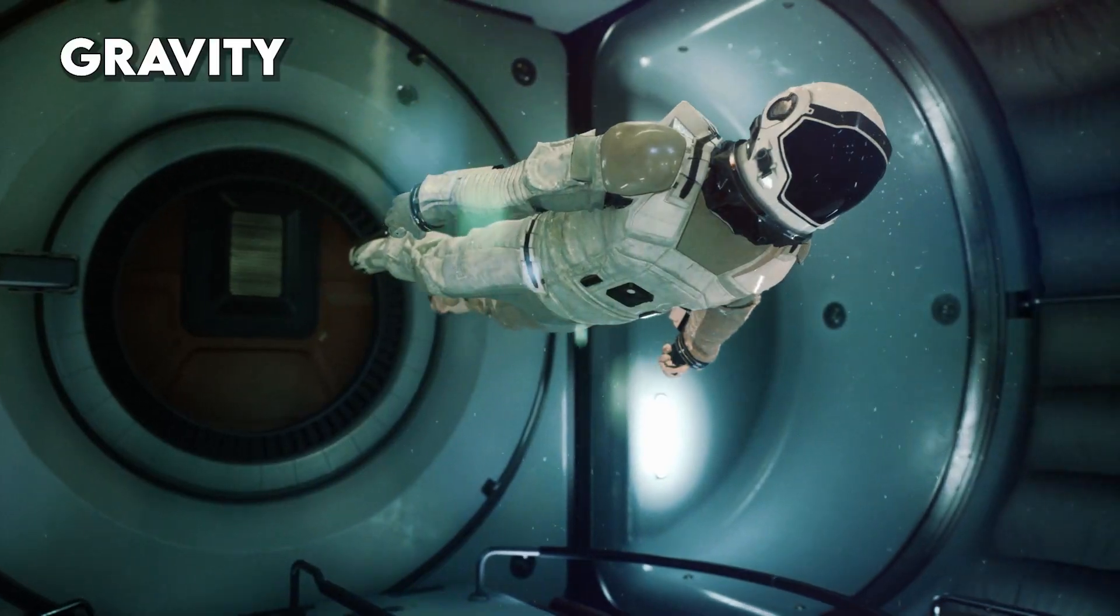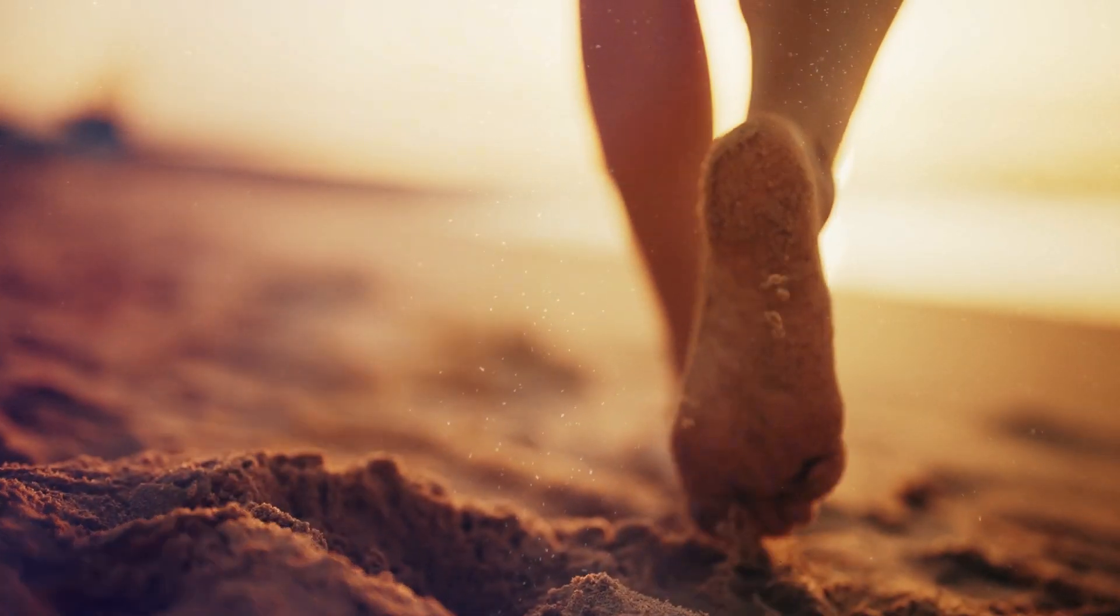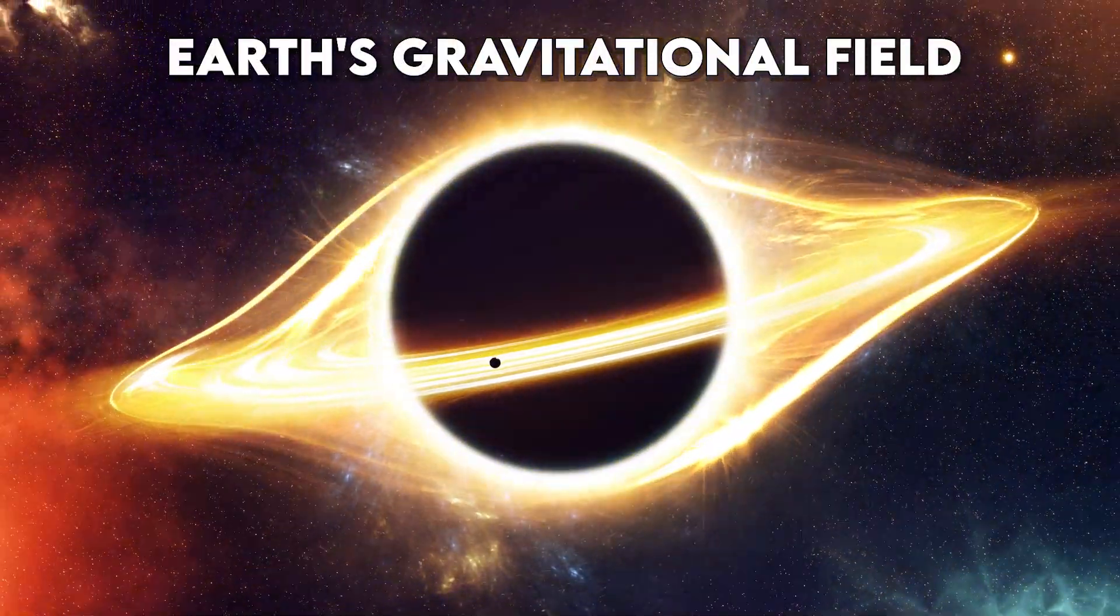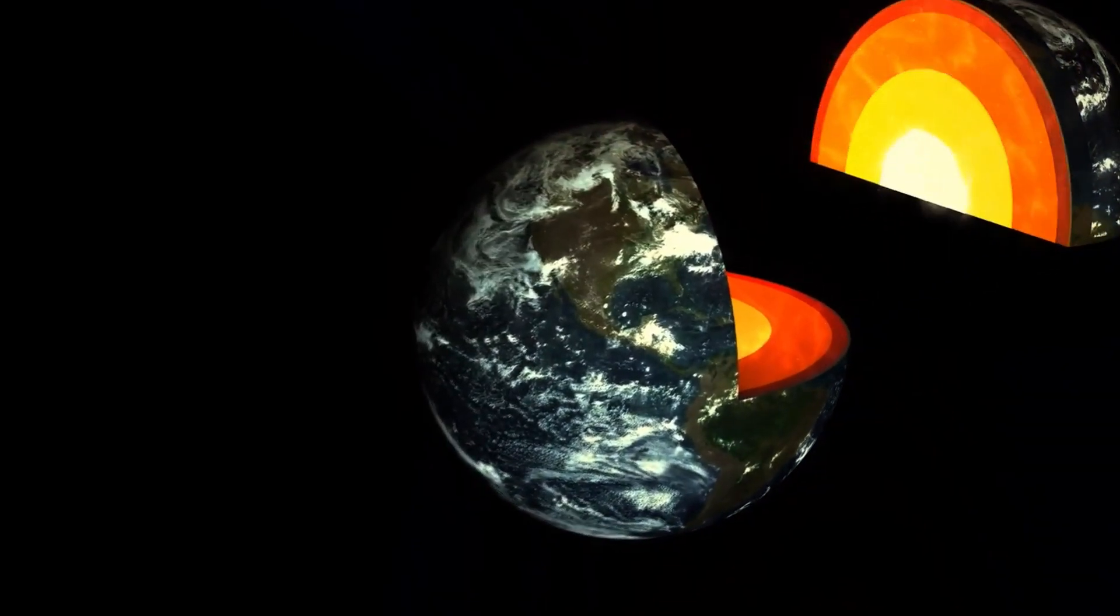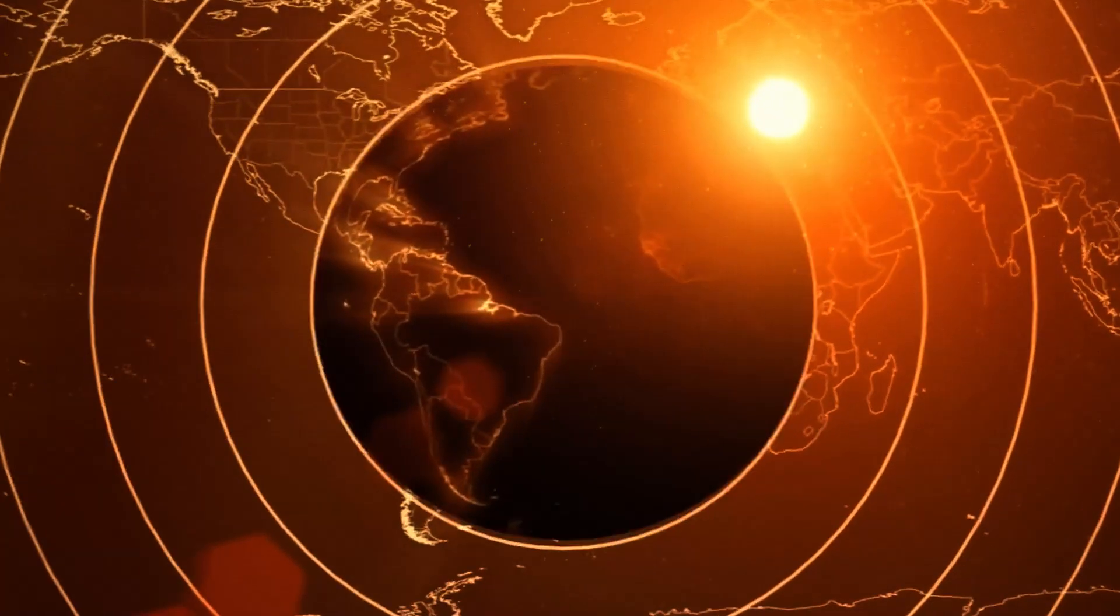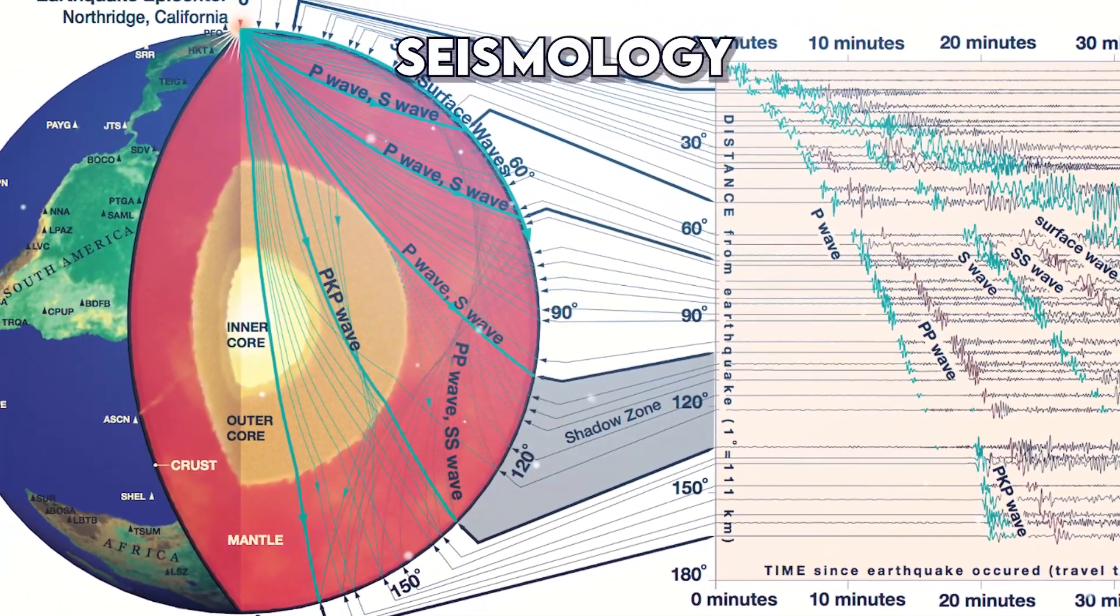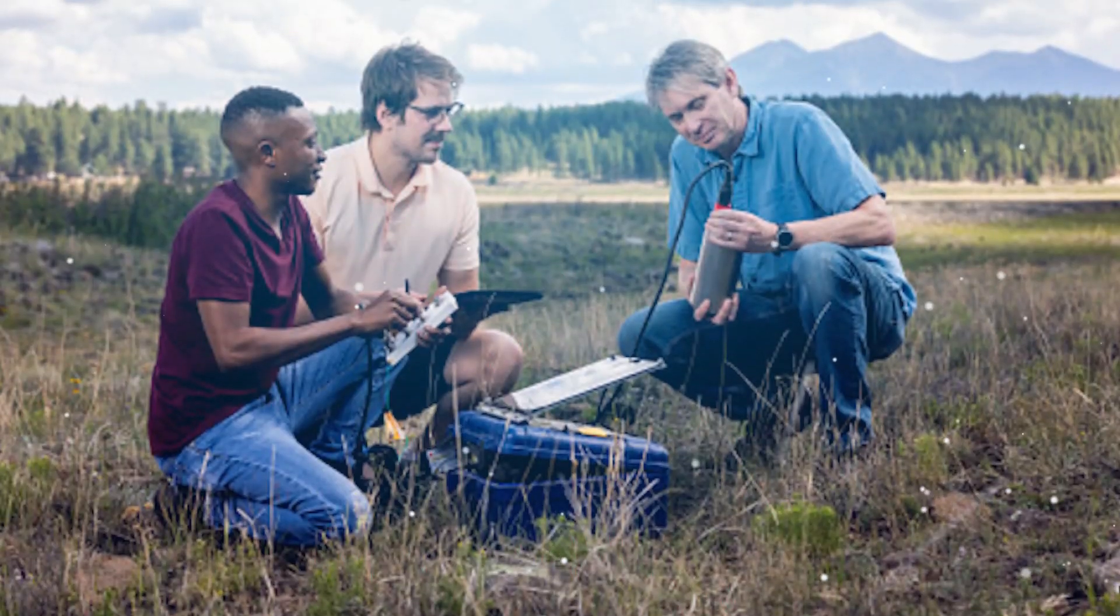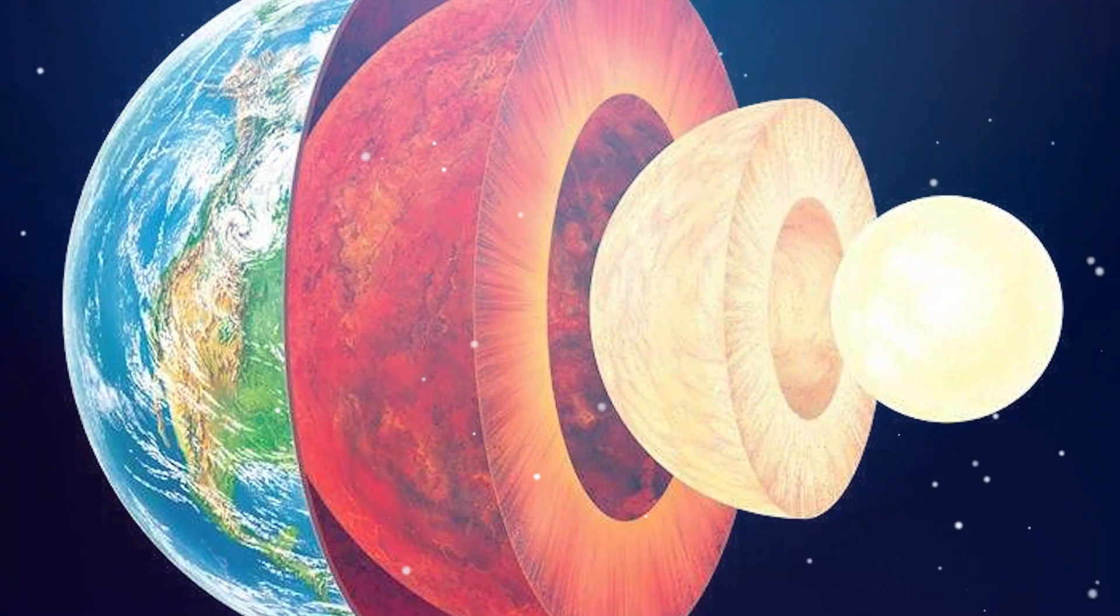Another tool in the toolkit is gravity—not the kind that makes you trip over your own feet, but the Earth's gravitational field. Variations in gravity can tell scientists about the distribution of materials inside our planet. It's like the Earth is dropping hints about its own composition. Then there's the fancy term seismology. Seismologists use data from earthquakes and explosions to create detailed images of the Earth's interior. It's a bit like using sound waves to take a peek inside.